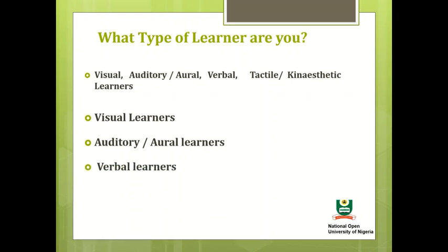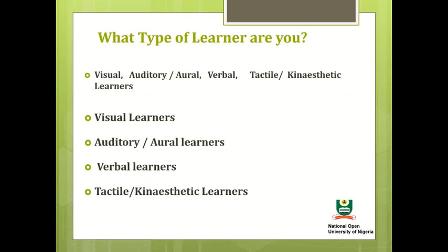Verbal learners: people that find themselves in this group study better through reading and writing. You can be seen as a verbal learner if using words in writing and speech comes easy to you. Tactile or kinesthetic learners: this group of learners would prefer physical activity. They learn by doing things. You might be a tactile or kinesthetic learner if you like crafts or enjoy using your hands to make things.